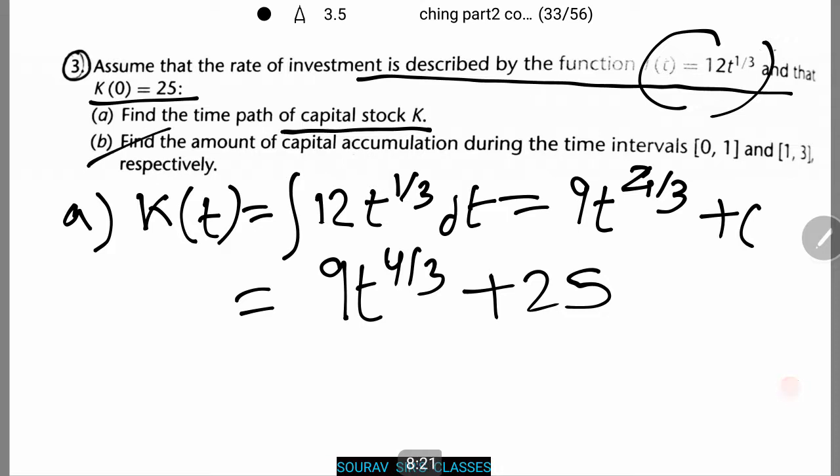Let's do number b. We need to find the amount of capital accumulation during the time intervals [0,1] and [1,3] respectively. I'll clear the screen so that you can see the question while we do the sum.